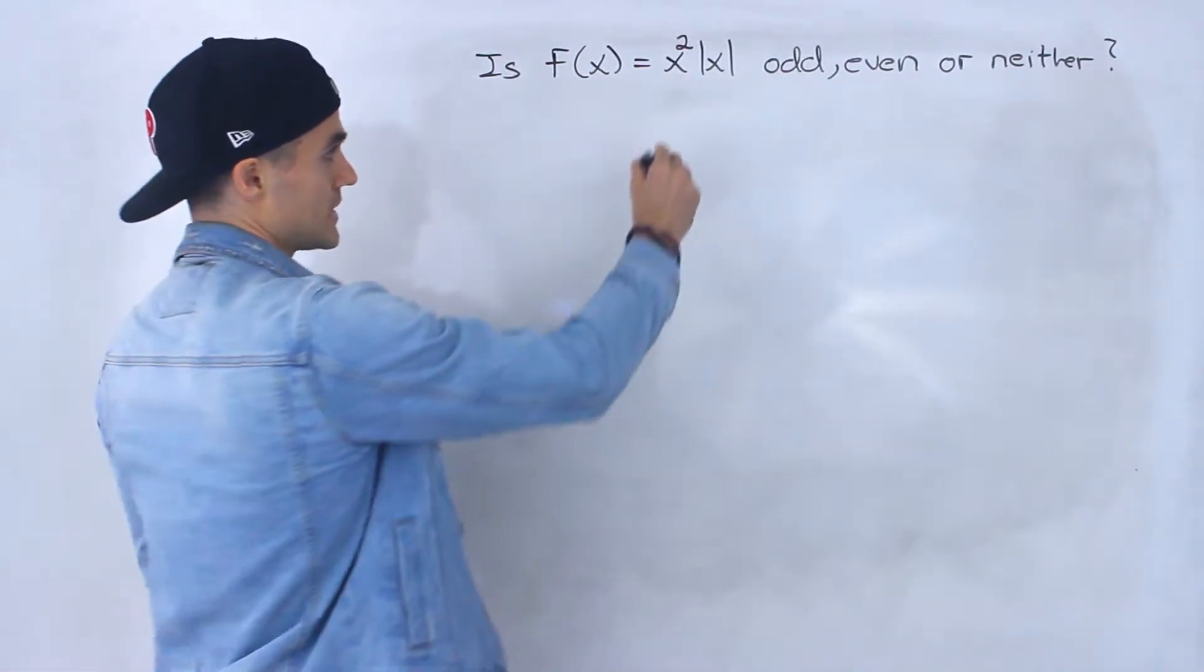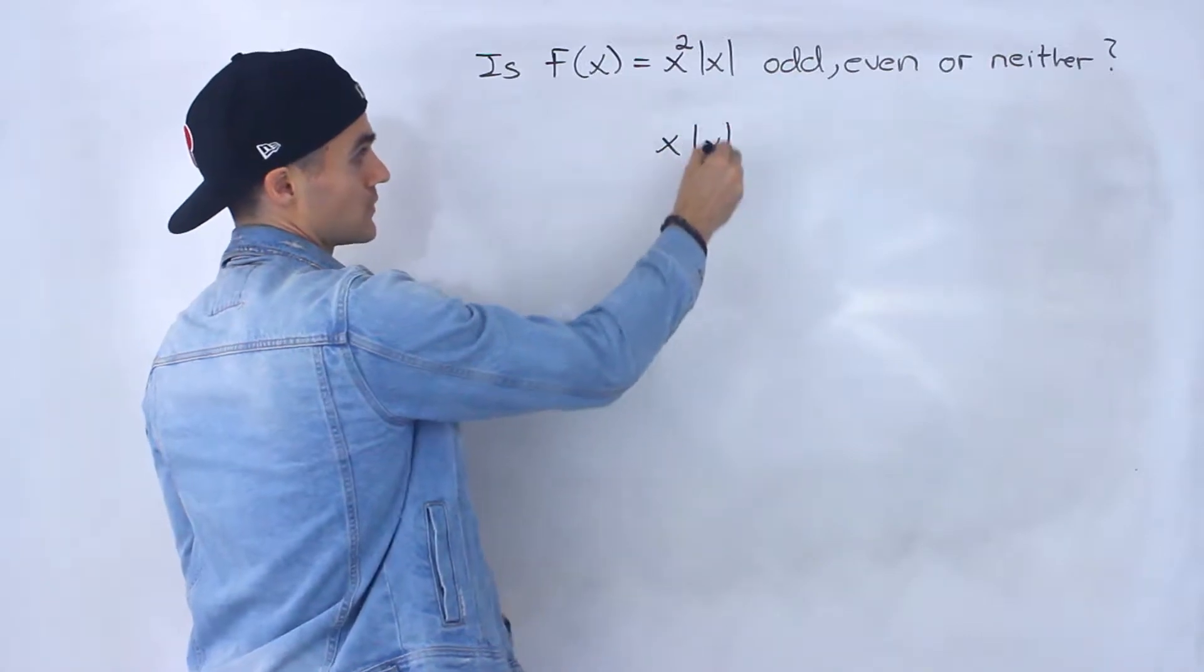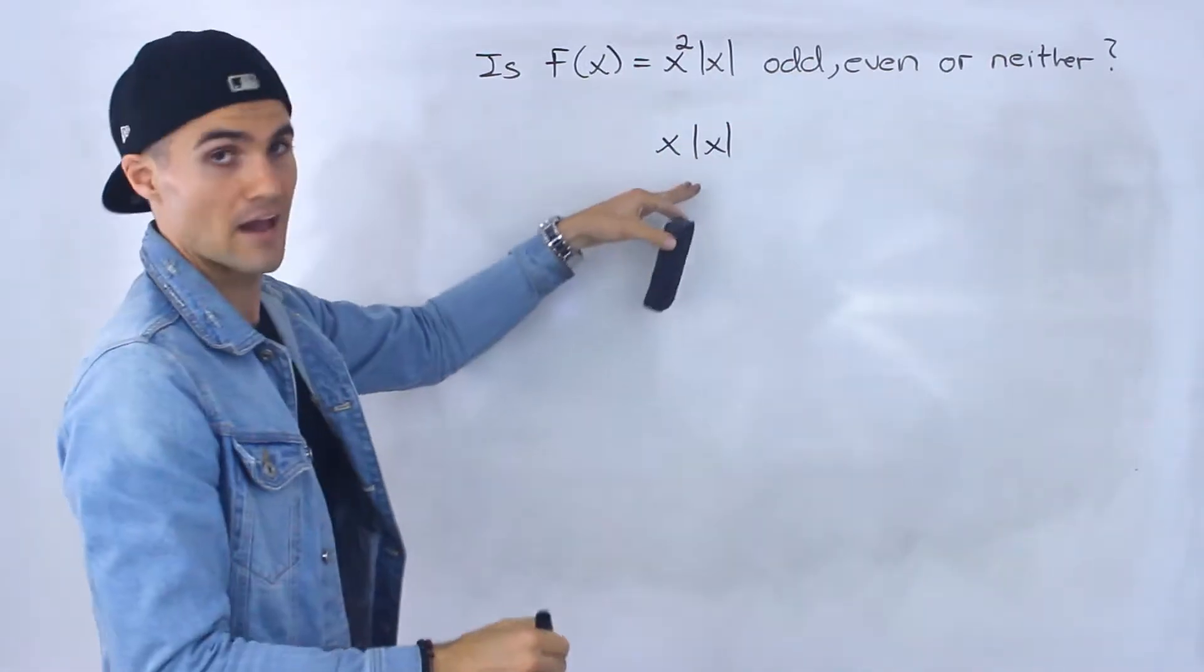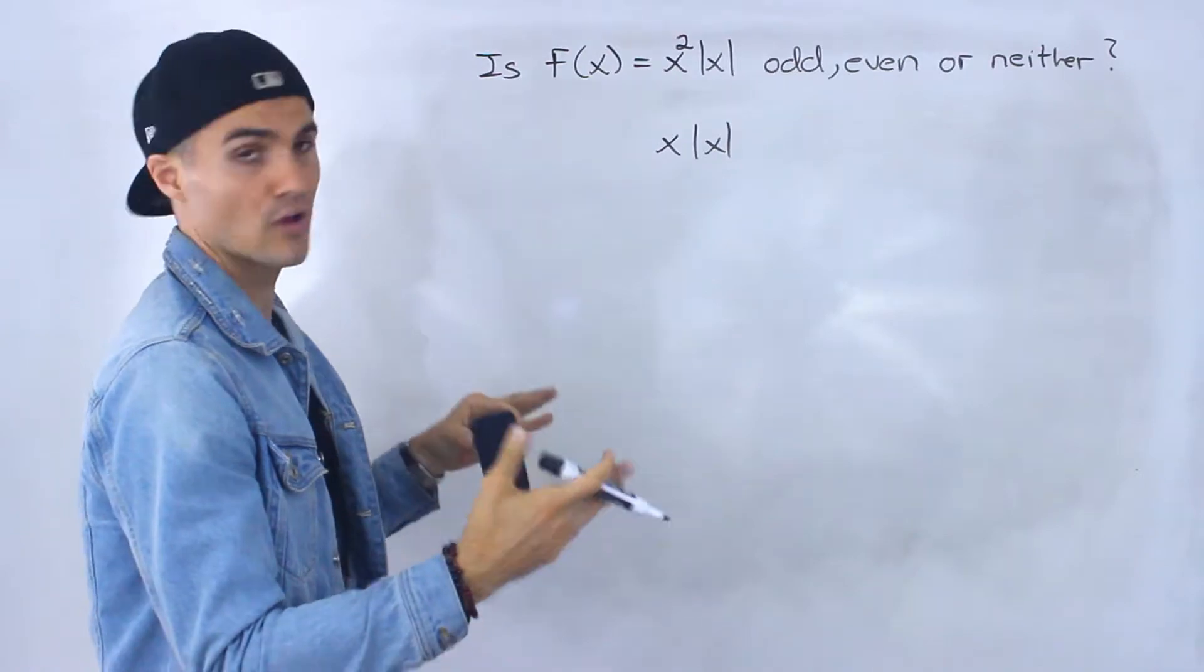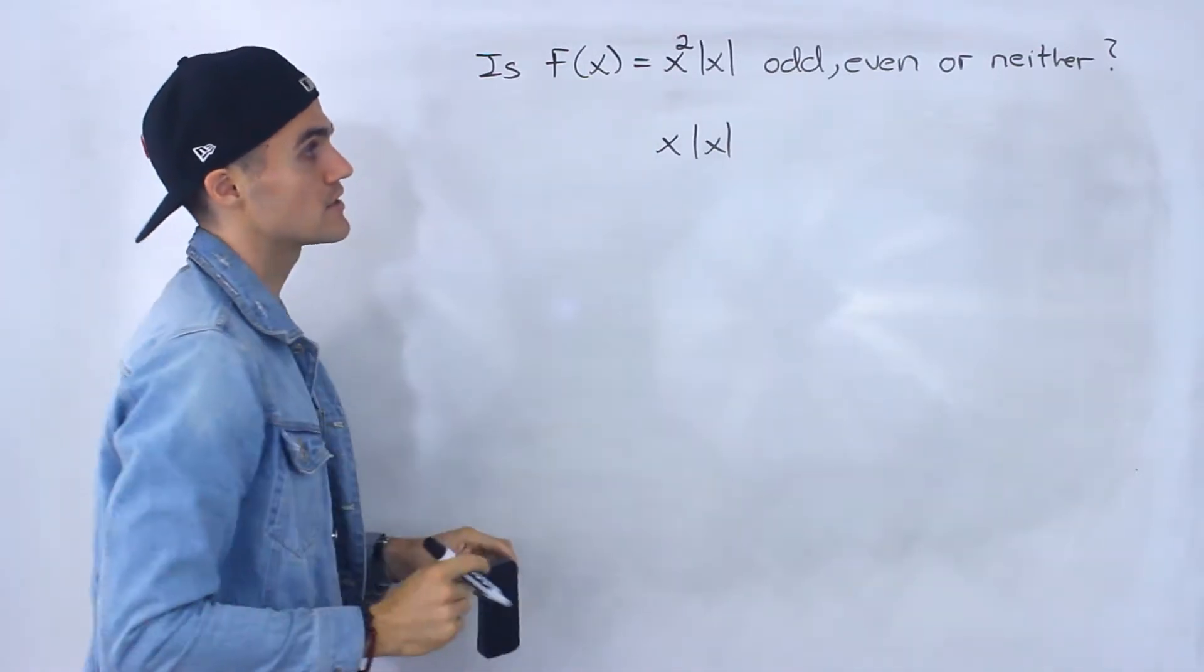Now in the previous example, we dealt with x absolute value x, and we figured out that that function was odd, showed it graphically as well, so I'm going to follow the exact same steps with this function.